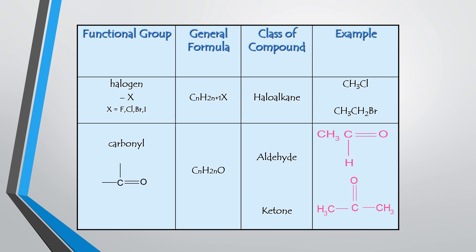The next functional group is the carbonyl group. There are two classes of compound that share the same general formula CnH2nO: aldehyde and ketone. Carbonyl is the only functional group that has two classes of compound. The difference is that in aldehyde, the carbonyl group (C=O) is located at the end of the carbon chain, while in ketone, the C=O is situated between two carbon atoms.